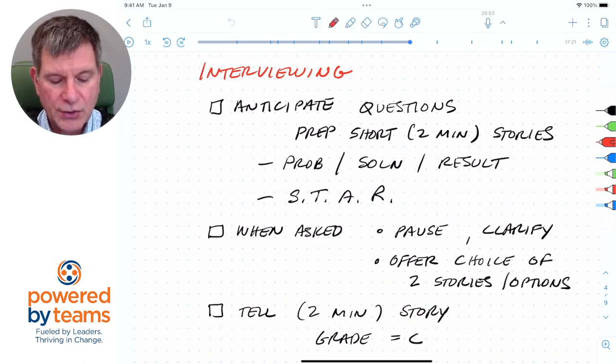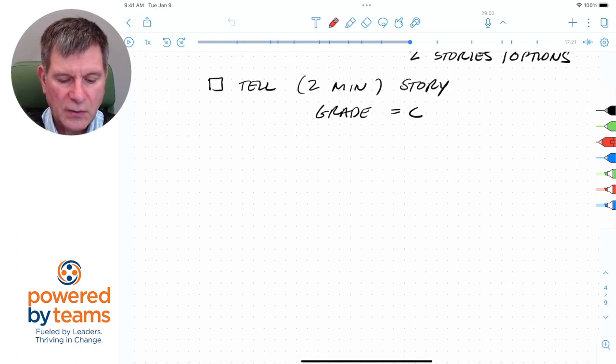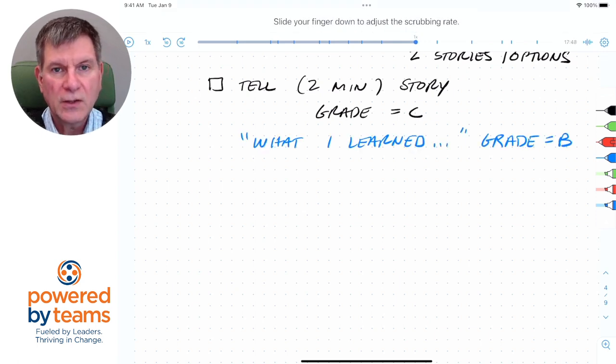Let's take it up a notch. So when you tell your story, as you conclude it, one of the things I recommend you do is what I learned from that was, and then give a sentence or two about what you learned from that experience. That takes your grade from a C to a B.